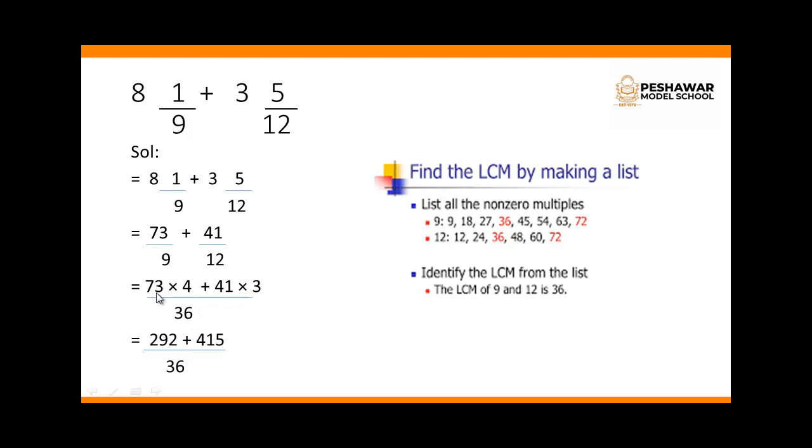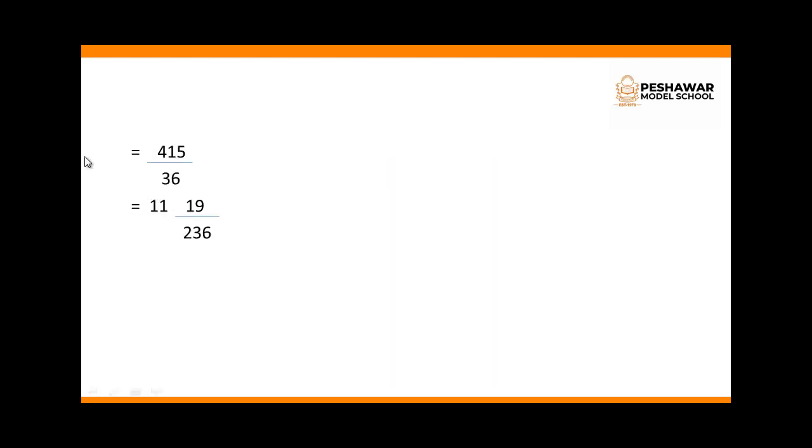Now 73 multiply 4 we will get 292, plus 41 multiply 3 we will get 123. By adding the numerators we will get 415 over 36. Now by dividing this fraction we will get 11 and 19 over 36.